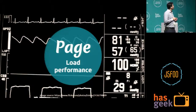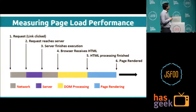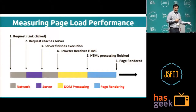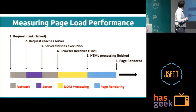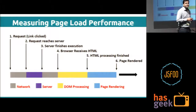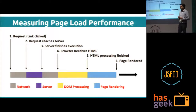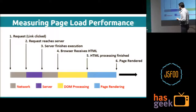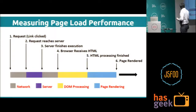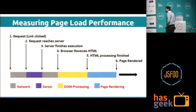How can we measure page load performance? This is a typical flow diagram of how a user navigates from one page to another. In step 1, a request is made by clicking a link, submitting a form, or other methods. The request reaches the server in step 2. After reaching the server, the app server processes it and gives a response in step 3. Once the browser receives the HTML it begins to process it in step 5, and step 6 consists of page rendering.